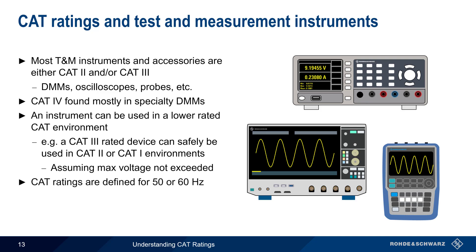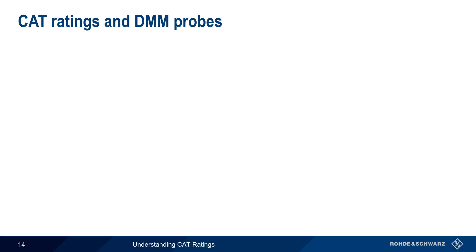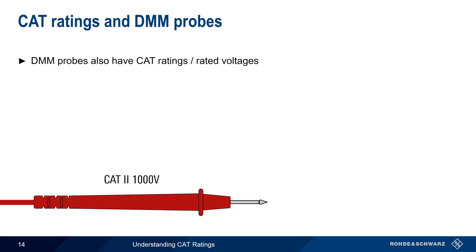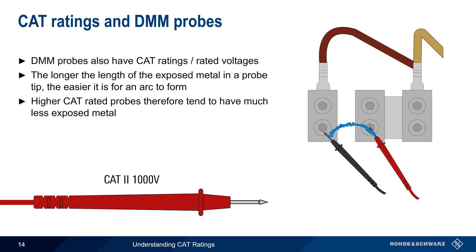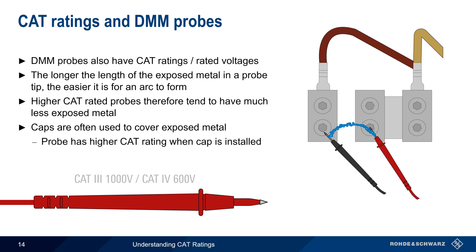One final thing to note is that CAT ratings apply only for 50 or 60 Hz AC. A different rating may apply when instruments are used to measure higher frequency voltages. The probes used with DMMs also have CAT ratings and rated voltages. Generally speaking, the longer the length of exposed metal in a probe tip, the easier it is for an arc to form. Therefore, probes rated for use in higher CAT environments tend to have much less exposed metal. Non-conductive caps are one method used to cover exposed metal, and some DMM probes will have a higher CAT rating when this cap is properly installed.